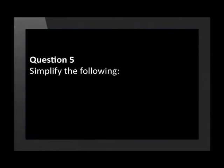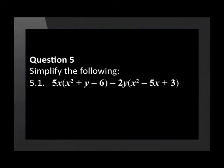Question 5 asks us to simplify three different expressions. 5.1 is 5x open brackets x squared plus y minus 6 close brackets minus 2y open brackets x squared minus 5x plus 3 close brackets. 5.2 is 7x open brackets 3z plus 2z minus 3 close brackets.